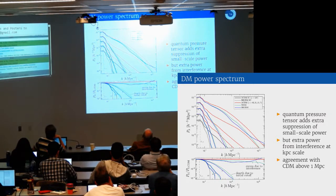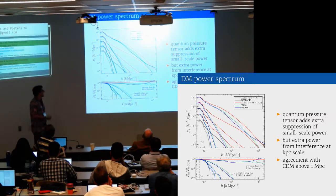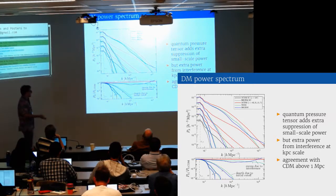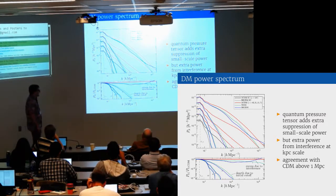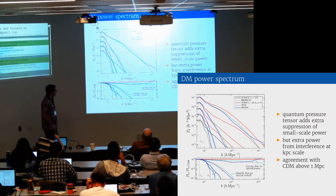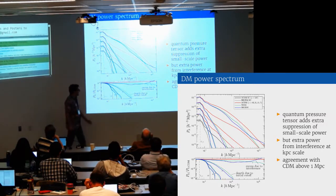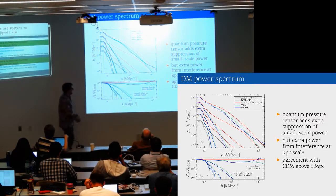If we look at the dark matter power spectrum, warm dark matter and fuzzy dark matter approximate each other quite well. There's of course a large suppression power compared to cold dark matter. But there is a big difference on tens of kiloparsecs of scales, where fuzzy dark matter predicts an excess of power due to interference patterns.